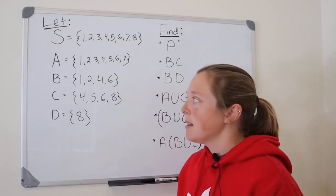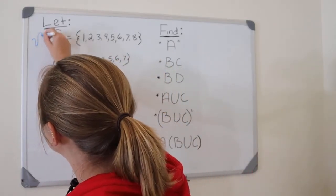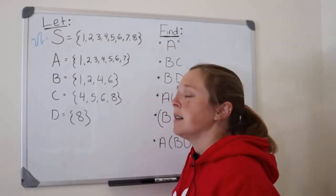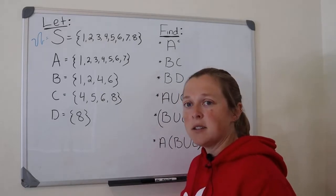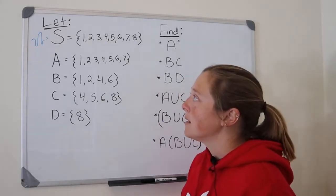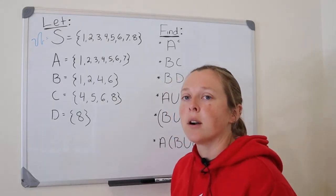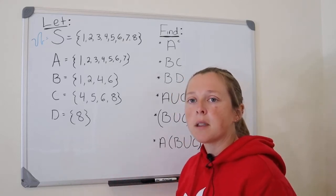So sample space, sometimes you'll see this referred to as omega. As you begin to study probability, you will discover that us statisticians, we love our Greek letters, so we'll throw a Greek letter out there that omega usually stands for the sample space. Other times you'll see it just written as a capital S.